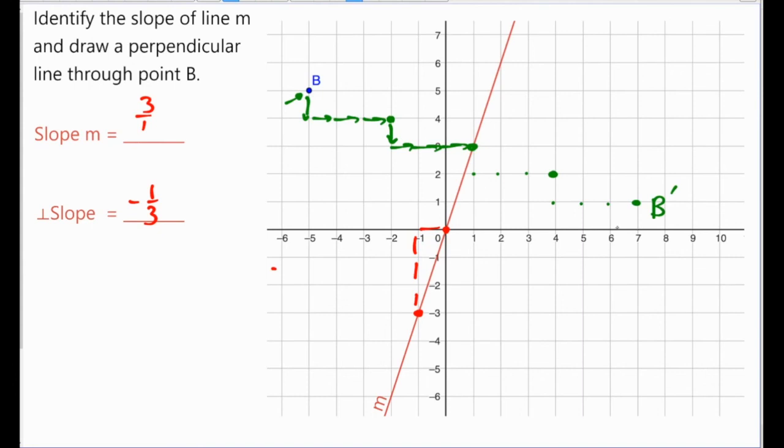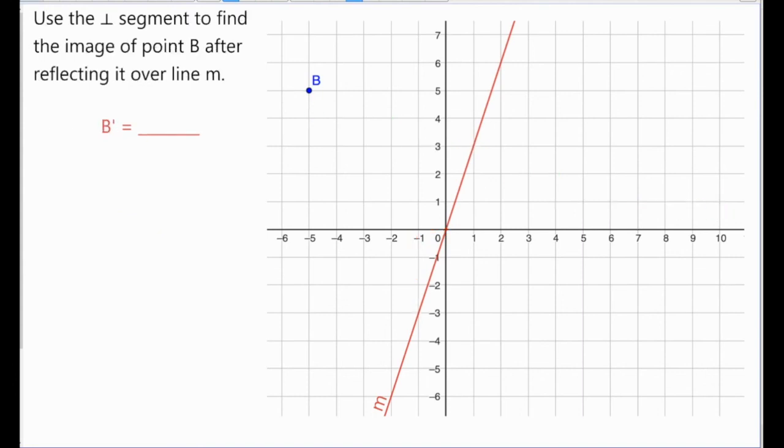So 1 down and 3 to the right, and then we do the second time 1 down and 3 to the right. This would be the location of our B prime, and we see the coordinates here are 7, 1. Again, the steps were to first find the slope of the line you were reflecting across, then find its perpendicular slope, then start at your pre-image point and move with the perpendicular slope till you land on the mirror, and then continue so that you have an equidistant location on the other side of the mirror and record those coordinates.